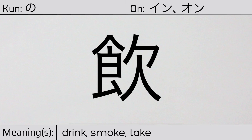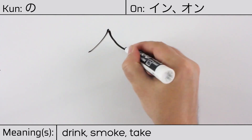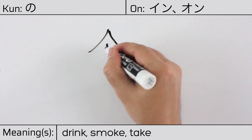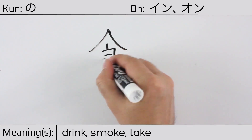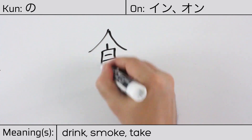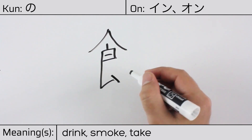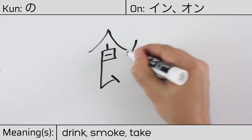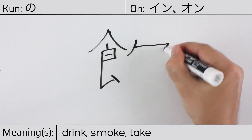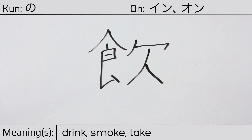Here is the stroke order: ichi, ni, san, shi, go, roku, shichi, hachi, kyu, juu, juuichi, juuni.